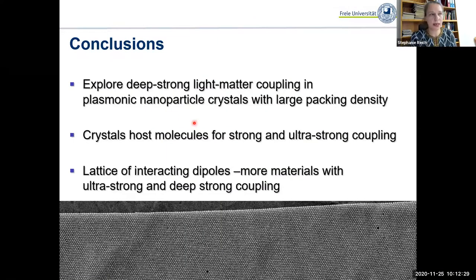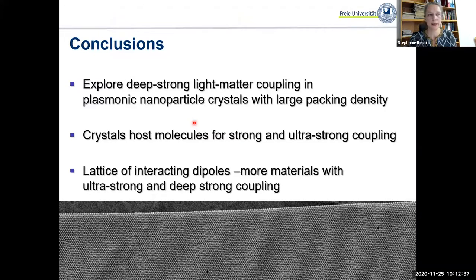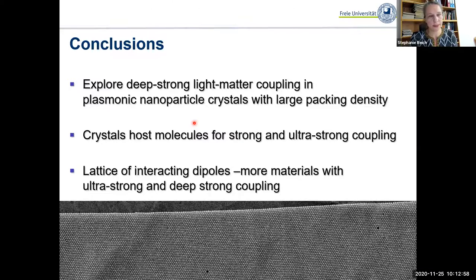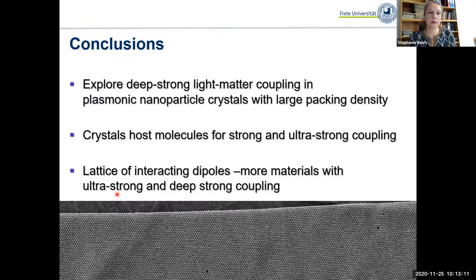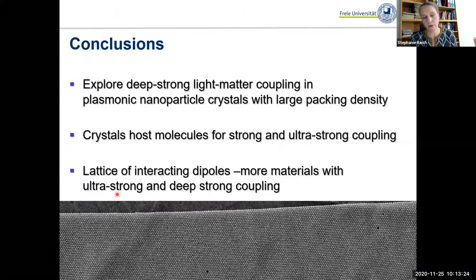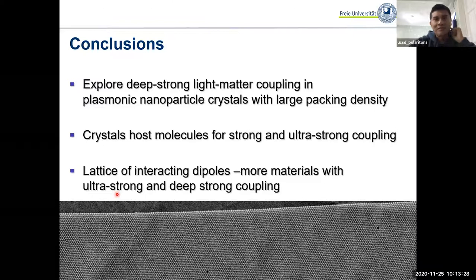In conclusion: it is possible to explore the extreme ranges of light-matter coupling using artificial crystals made out of densely packed gold nanoparticles. We can use this to study the physics of extreme light-matter coupling regimes, and also use the crystals as hosts to put molecules into a very special electromagnetic environment. Importantly, what we put into the theory is just a lattice of interacting dipoles — there is nothing very special about the plasmons themselves. So there should be more materials where you can take excitons, or even dipoles of infrared vibrations, to construct materials with ultra-strong and deep-strong light-matter coupling.